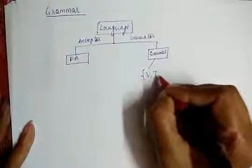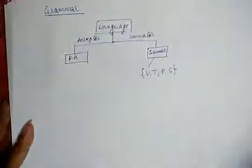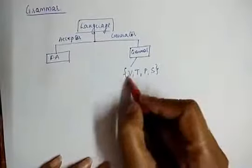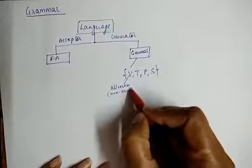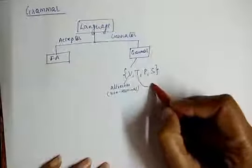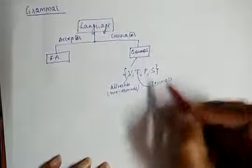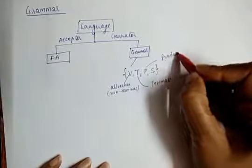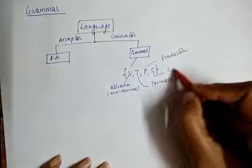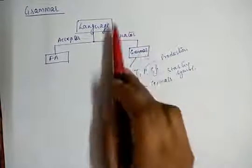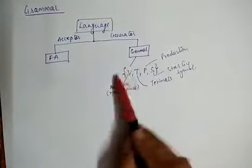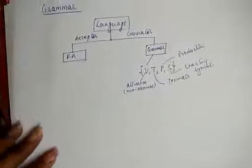A grammar is generally represented by the set G = (V, T, P, S). Here V is the set of all variables, which are non-terminals. T is the set of all terminals. P is the set of productions, and S is the starting symbol. A particular grammar for a particular language is represented by this set V, T, P, S.